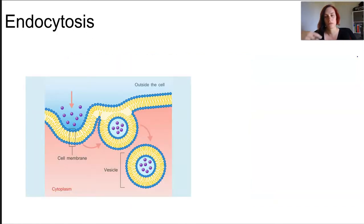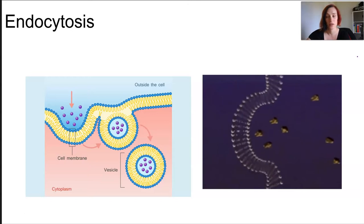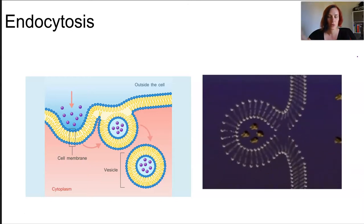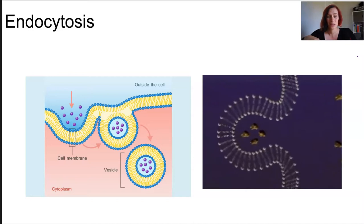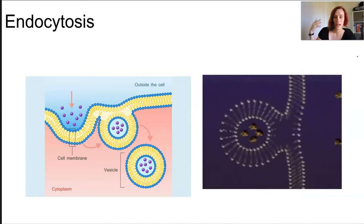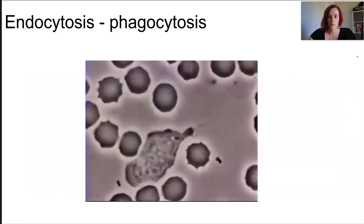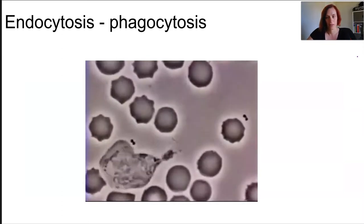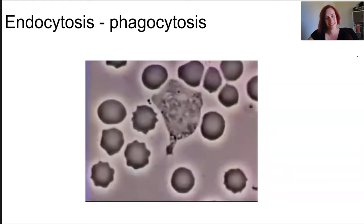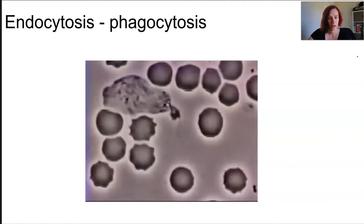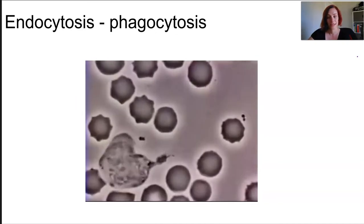Endocytosis is transporting really large things that don't fit through a protein channel — this might be antibodies, food for digestion, or bacteria for a white blood cell to destroy — and it occurs due to the fluidity of the membrane. The phospholipids in the membrane actually reconfigure to engulf something and take it back into the cell, where the membrane opens up and then restructures itself. Phagocytosis is cell eating, while pinocytosis is cell drinking. You can watch a white blood cell chase a bacterium in the bloodstream and eventually phagocytose it.